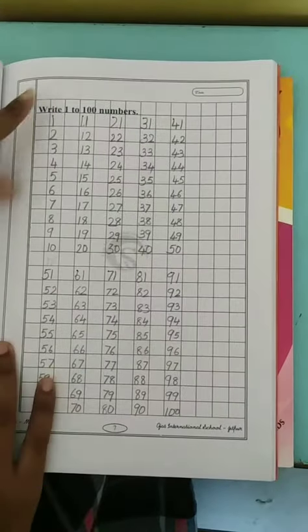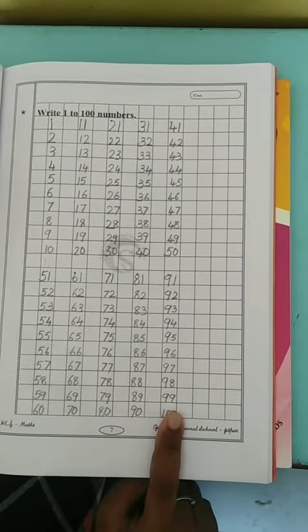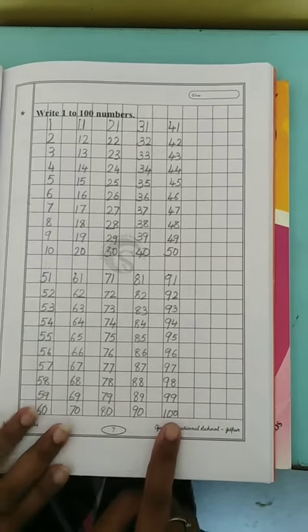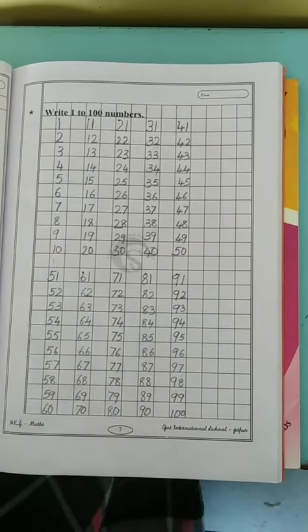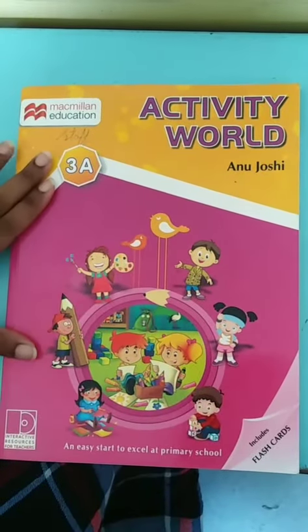As you already learned 1 to 100 numbers in LKG and the same way in HKG, with the basis of this, today we are going to do our missing numbers in our 3A book.